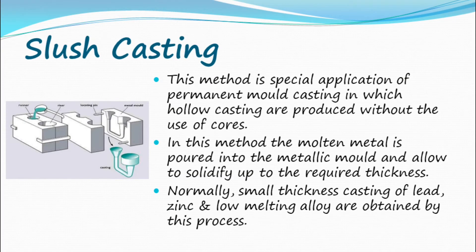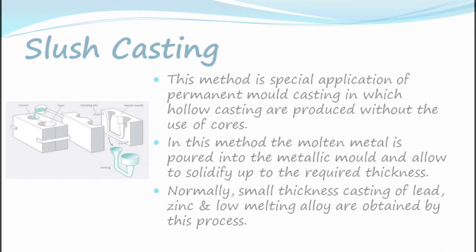Slush casting: this method is a special application of permanent mold casting in which hollow castings are produced without the use of cores. The molten metal is poured into the metallic mold and allowed to solidify up to the required thickness. Normally, small thickness castings of lead, zinc, and low melting alloys are obtained by this process.